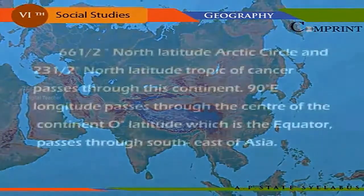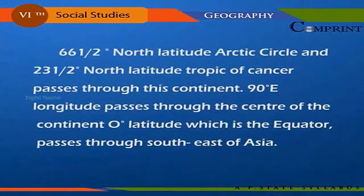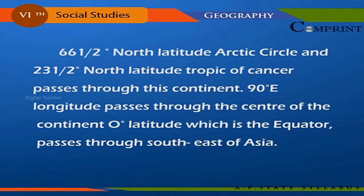The Arctic Circle at 66.5 degrees north latitude and the Tropic of Cancer at 23.5 degrees north latitude pass through this continent. The 90 degrees east longitude passes through the center of the continent.